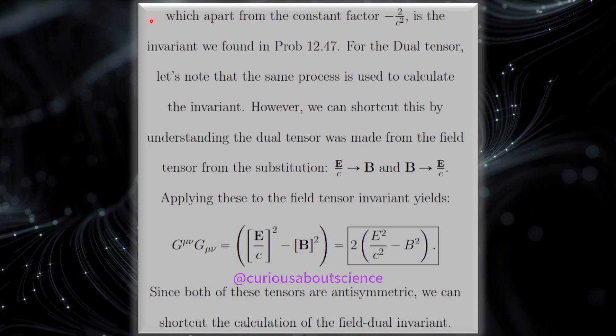Alright. Which apart from the constant factor of negative two divided by C squared, is the invariant we found in problem 12.47. For the dual tensor, let's note that the same process is used to calculate the invariant. However, we can shortcut this by understanding that the dual tensor was made from the field tensor using the substitutions down here. This is what I mentioned in the matrix summary. This was also given to us in the book, and it is much easier to deal with. That being said, if we apply these, we see what we get in terms of our yielding, which looks very similar, except kind of backwards.